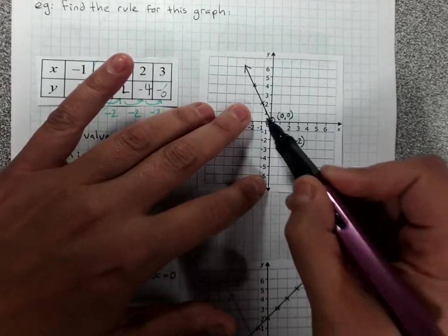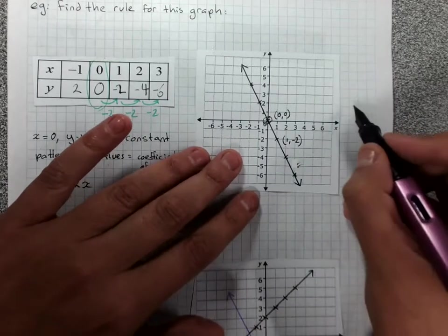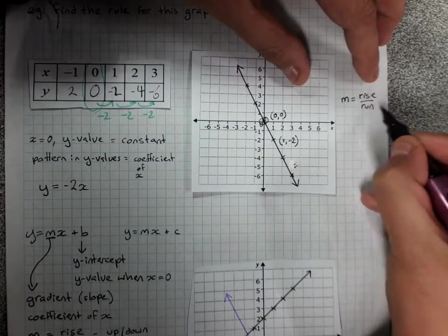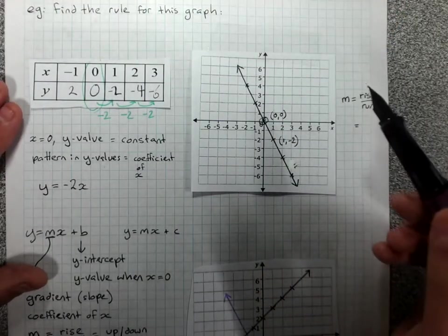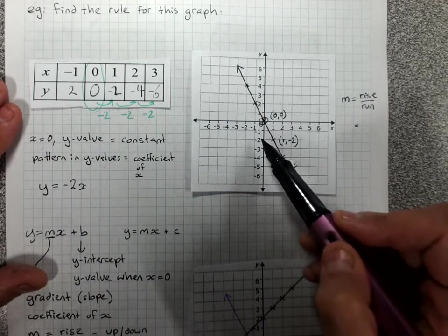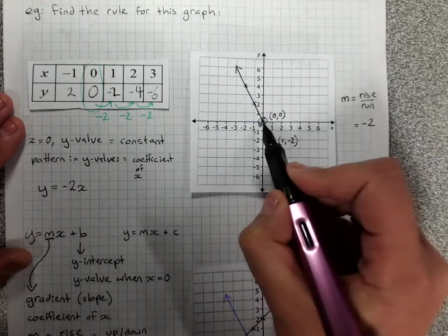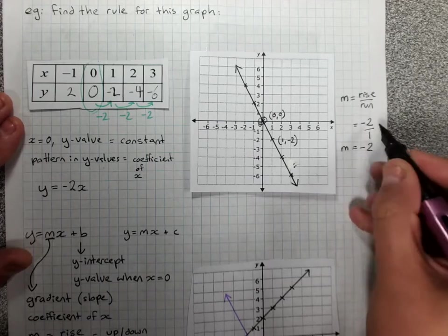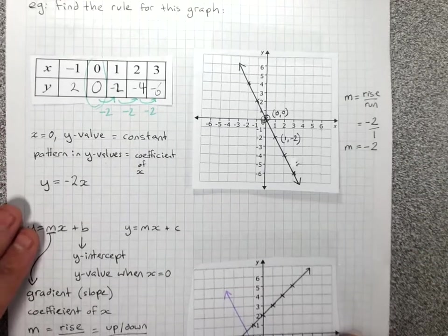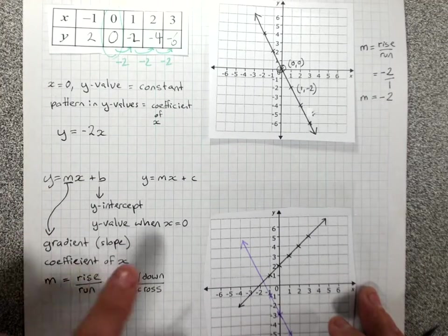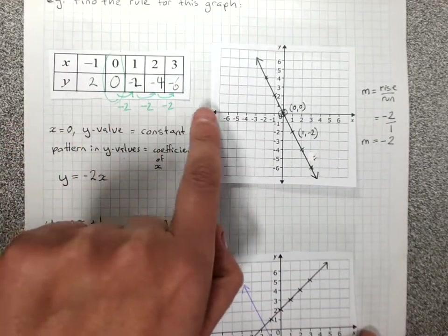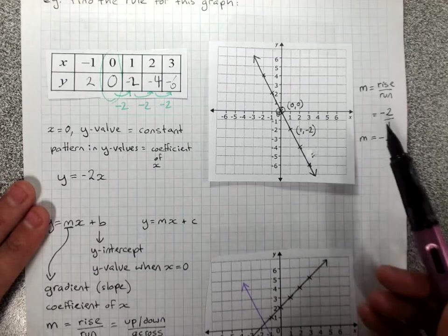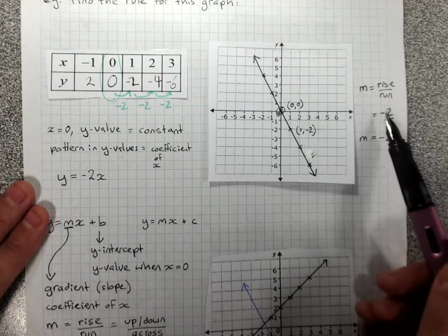It's nice and easy to take two points that are next to each other in x-values. If I was finding the gradient for this slope, m equals rise over run. Between these two points, how much did the line go up or down? It went down two points, so my rise is actually a drop of 2. How much did it go across? Run. It went across 1. My gradient, my slope, negative 2 divided by 1 is negative 2. That's how we get that coefficient of x straight from a graph. Instead of putting it into a table to find the pattern, we find it from two points.